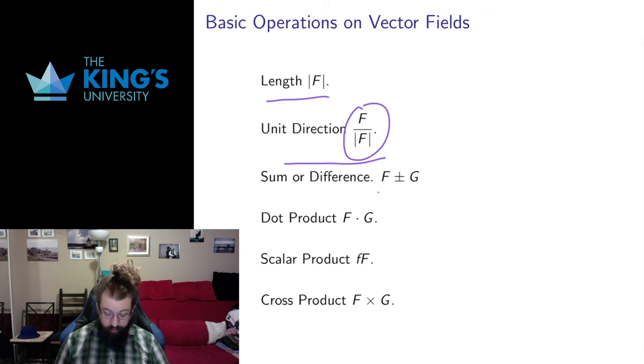If I have two vector fields, I can add them up component-wise, adding vectors. I can subtract them component-wise, subtracting vectors. I can take the dot product of two vector fields. That will give me, again, a scalar field because the dot product of two vectors is a scalar. If I have a scalar field little f and a vector field capital F, I can take the scalar product. So at each point in space, I'll calculate the two different functions, and then I'll take the vector and multiply each component of it by the scalar.